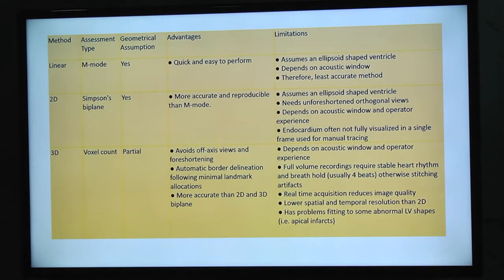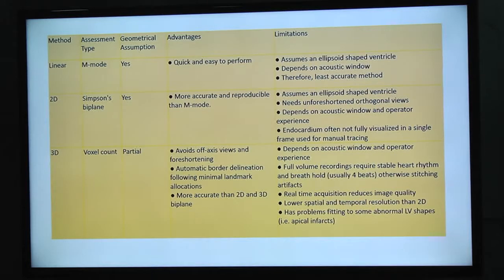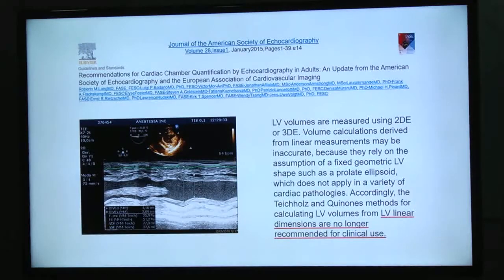When we work with 2D, there's also a geometric assumption, but Simpson's method improves that, making it more reproducible and accurate. When we work with 3D echo, this geometric assumption is only partial because the computer performs a direct voxel count. Since 2015, linear measurements to obtain LV volumes are no longer recommended for clinical use.